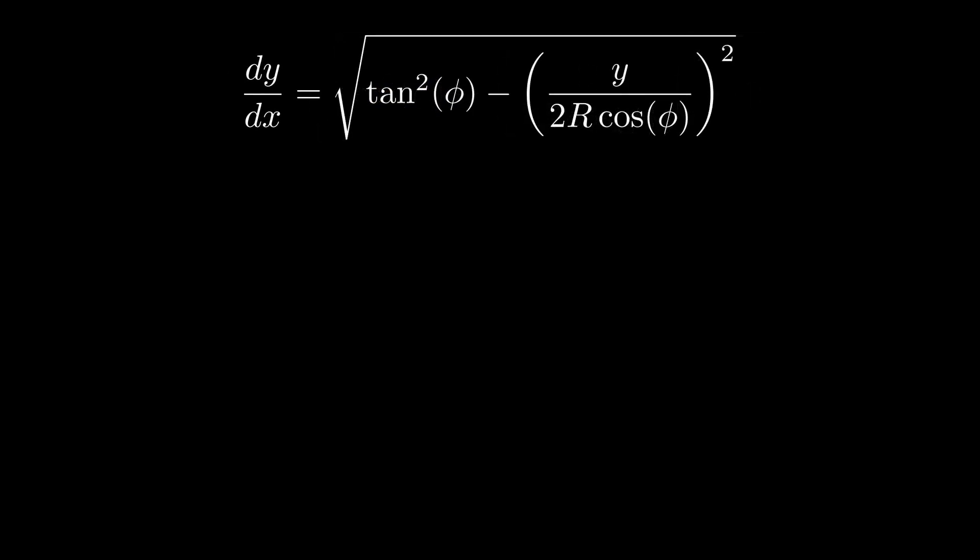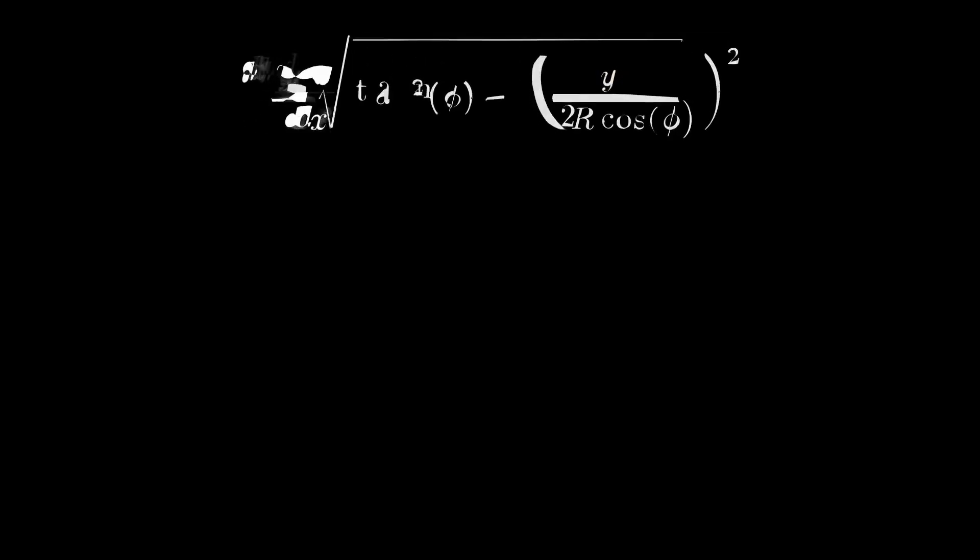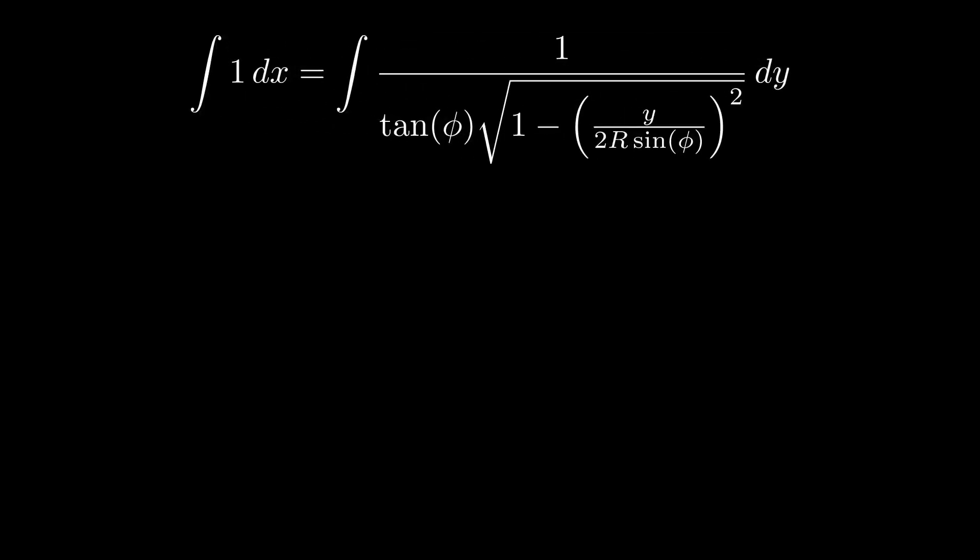We have three variables now, phi, r, and y. However, it's key to remember that phi and r are both constants, so y is the only variable here we actually need to worry about. With that in mind, solving this differential equation isn't too bad. I encourage you to give it a try yourself, but the main key is recognizing the derivative of arc sine in the integrand on the right. Evaluating both integrals yields this equation here. To solve for y, let's divide, take the sine of both sides, and multiply to get our final function.